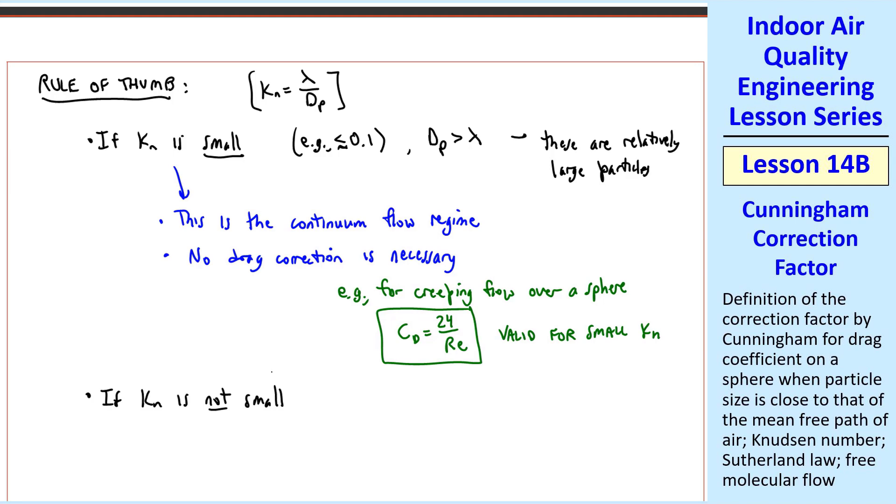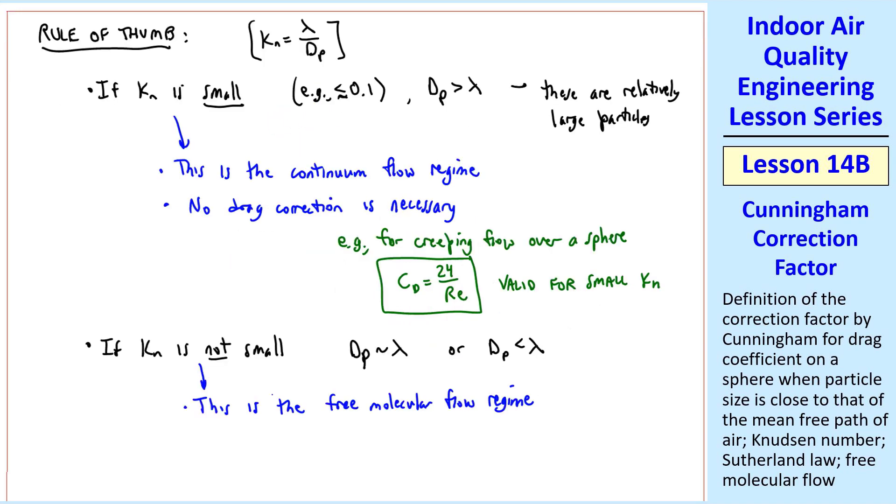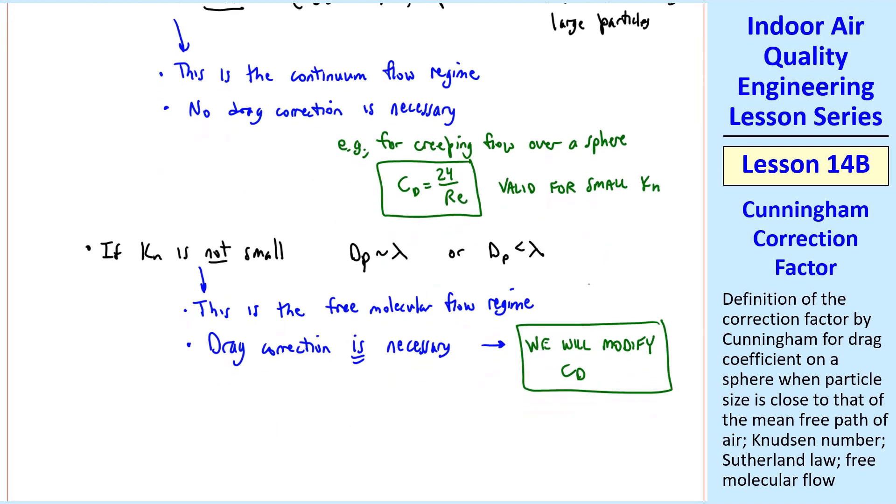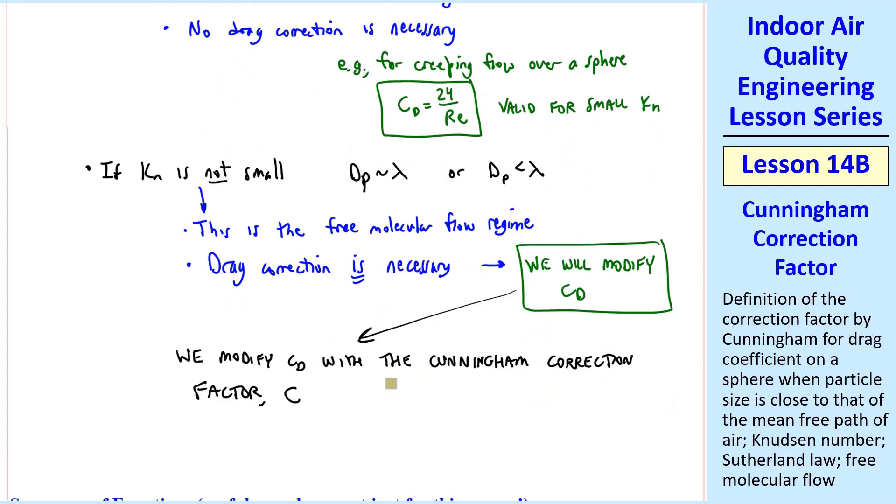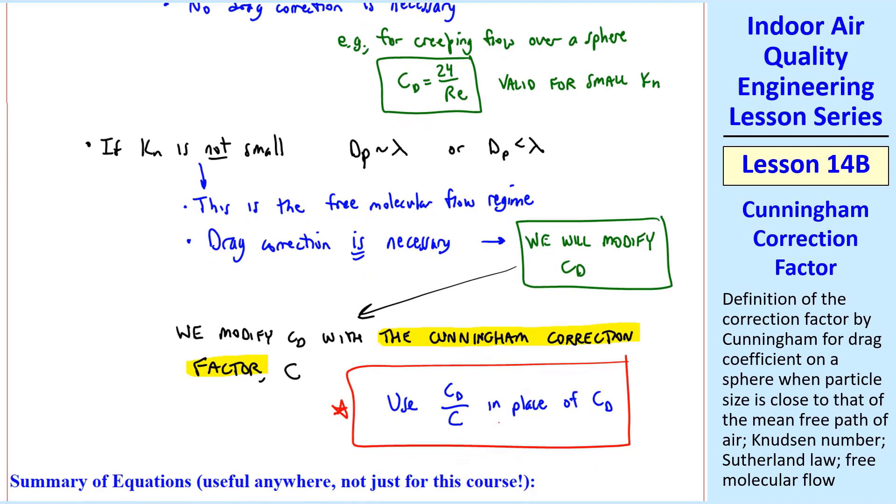If Kn is not small, in other words when dp is approximately the same order of magnitude as lambda or dp is smaller than lambda, then by definition Kn is not small. This is the free molecular flow regime, where free molecular effects are important and a drag correction is necessary. We will have to modify cd. As I said, we expect cd to be smaller. We do this modification with a correction factor called the Cunningham Correction Factor, given the symbol capital C. Namely, we use cd divided by C in place of cd.